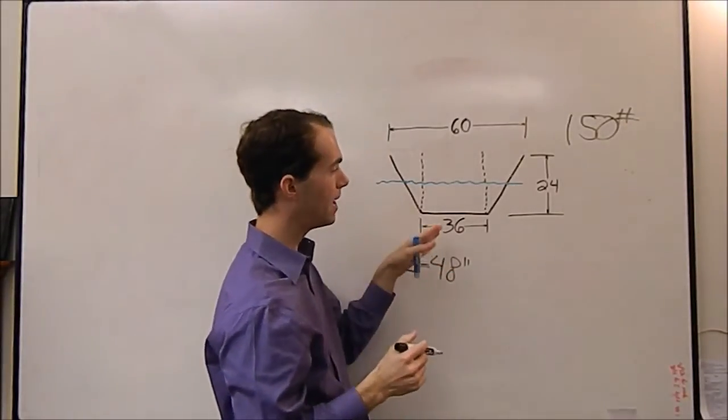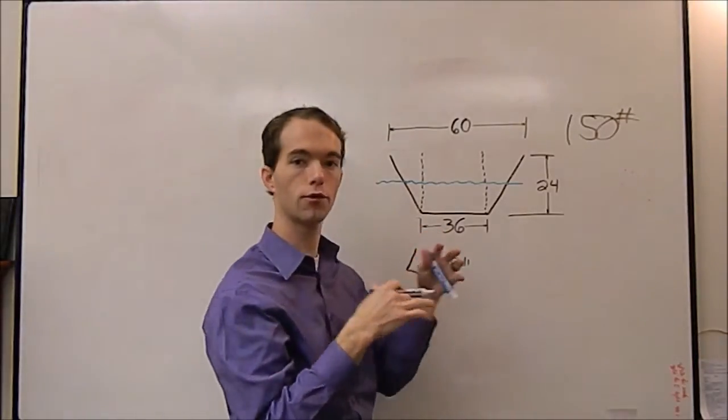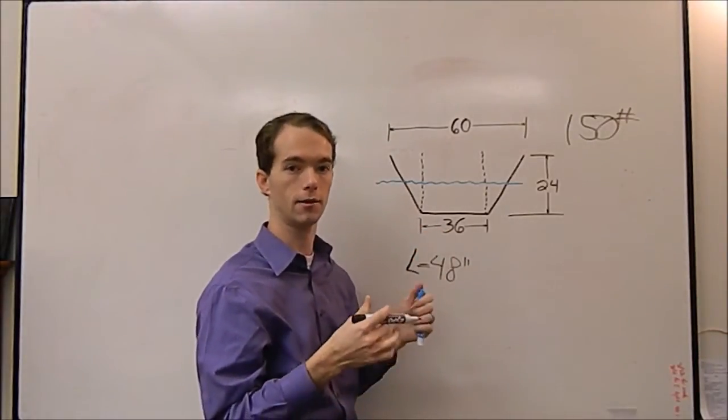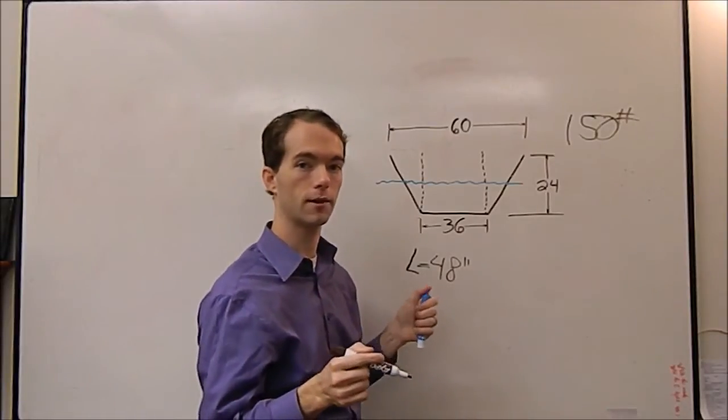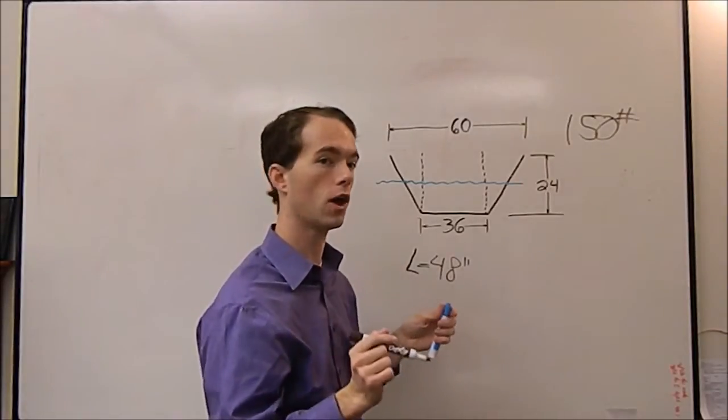Now, ordinarily, slope is calculated rise over run. Well, in this case, our dependent variable and independent variables are flipped. So in this case, it's run over rise, which is kind of backwards. And the first time I built a boat like this, let me tell you, that tripped me up an awful lot.